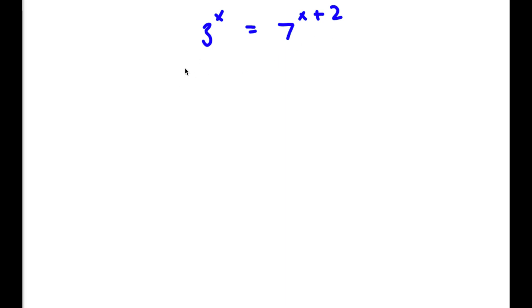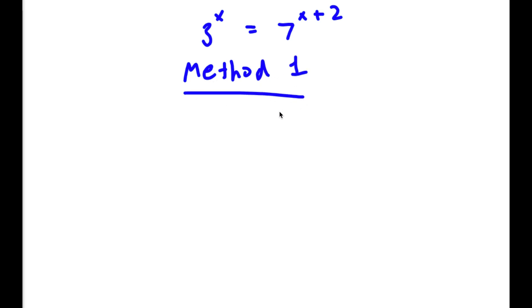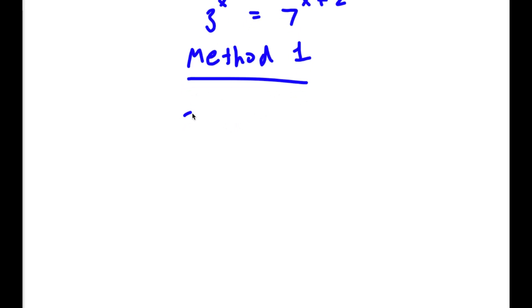I actually have two methods of solving this problem. So let's first start with method one. We have 3 to the power of x is equal to 7 to the power of x plus 2.